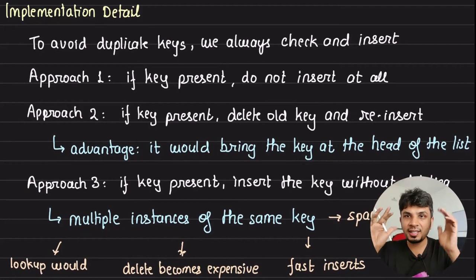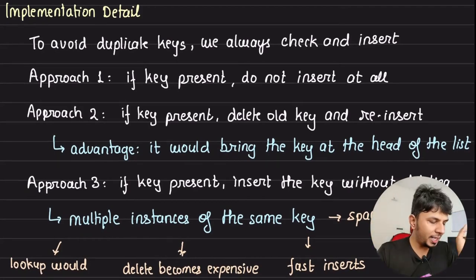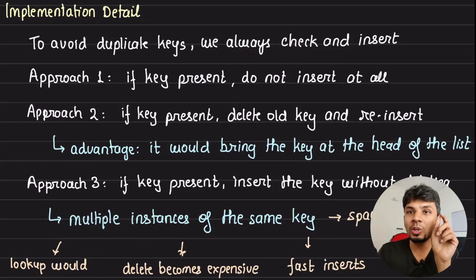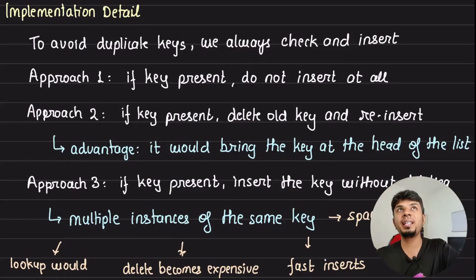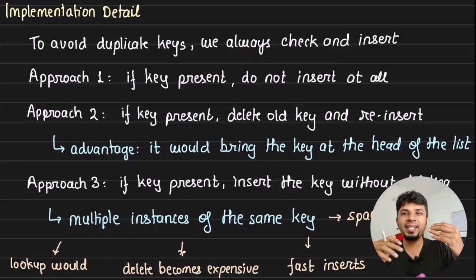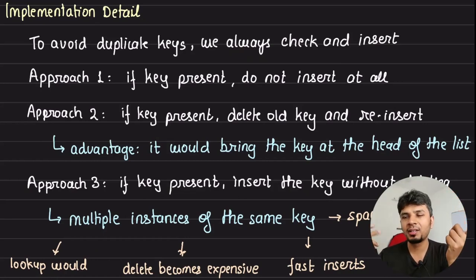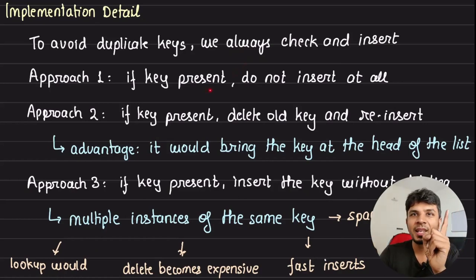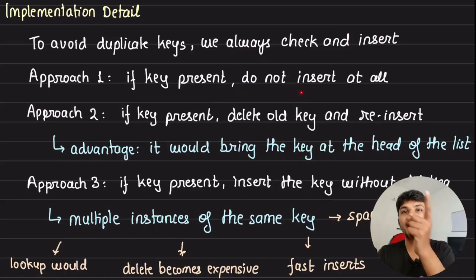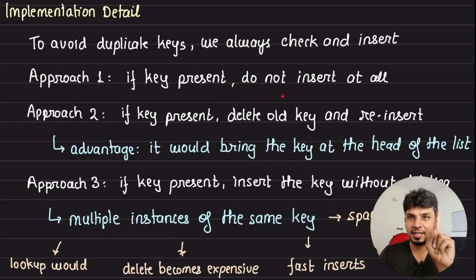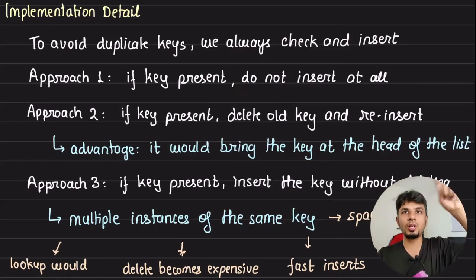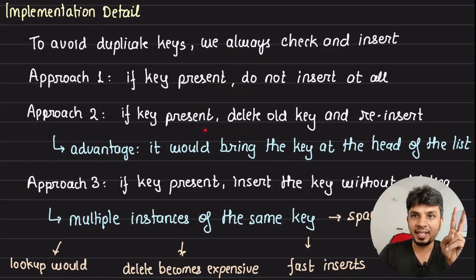Now a deeper implementation detail: to avoid duplicates, we always have to check and insert. We don't want two exact same keys in the hash map. So we can't just blindly insert at the head of the linked list. Approach one: if the key is present, we do not insert at all but update. We do a lookup, get the node pointer, and update the value.